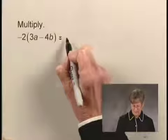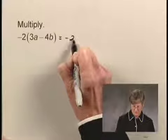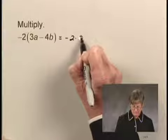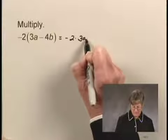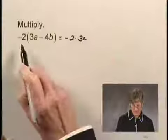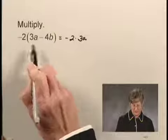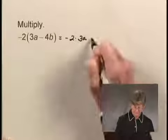I can write negative 2 times 3a, and then I'm also going to multiply negative 2 and negative 4b.